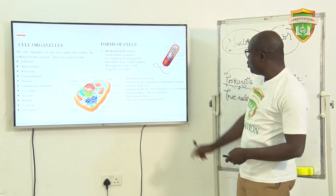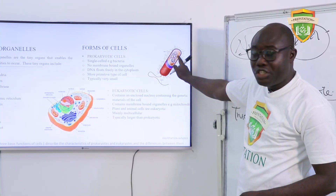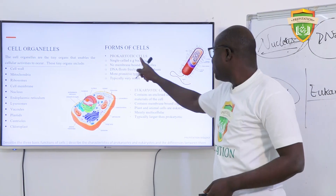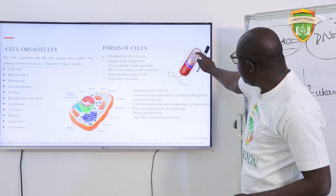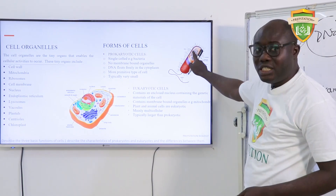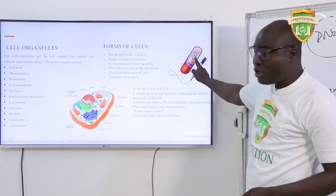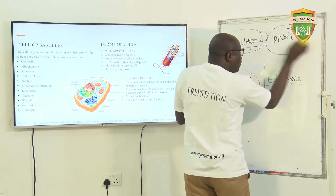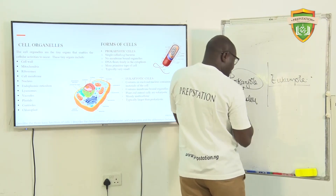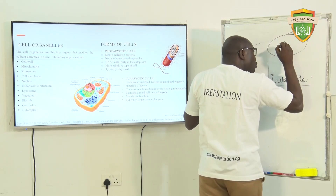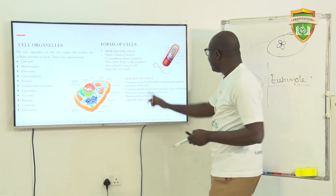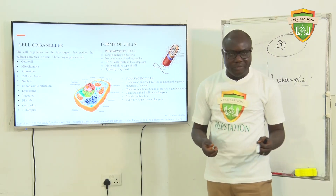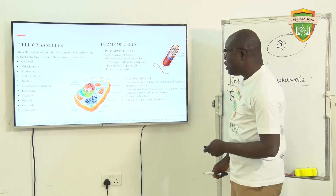Let me show you an illustration. This cell here is a bacterium, an example of a prokaryotic organism. You can see this material here — those are the genetic materials found inside the bacteria. Normally, the genetic material is supposed to be enclosed inside the nucleus. But in the case of this prokaryotic organism, the genetic material is there, but there's nothing enclosing it — no boundary, no membrane covering it.